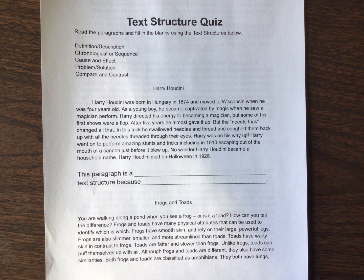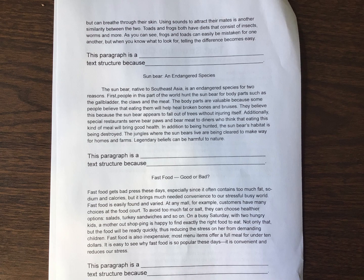Toads have warty skin in contrast to frogs. Toads are fatter and slower than frogs. Unlike frogs, toads can puff themselves up with air. Although frogs and toads are different, they also have some similarities. Both frogs and toads are classified as amphibians. Both have lungs but can breathe through their skin. Using sounds to attract their mates is another similarity between the two. Toads and frogs both have diets that consist of insects, worms, and more. As you can see, frogs and toads can easily be mistaken for one another.